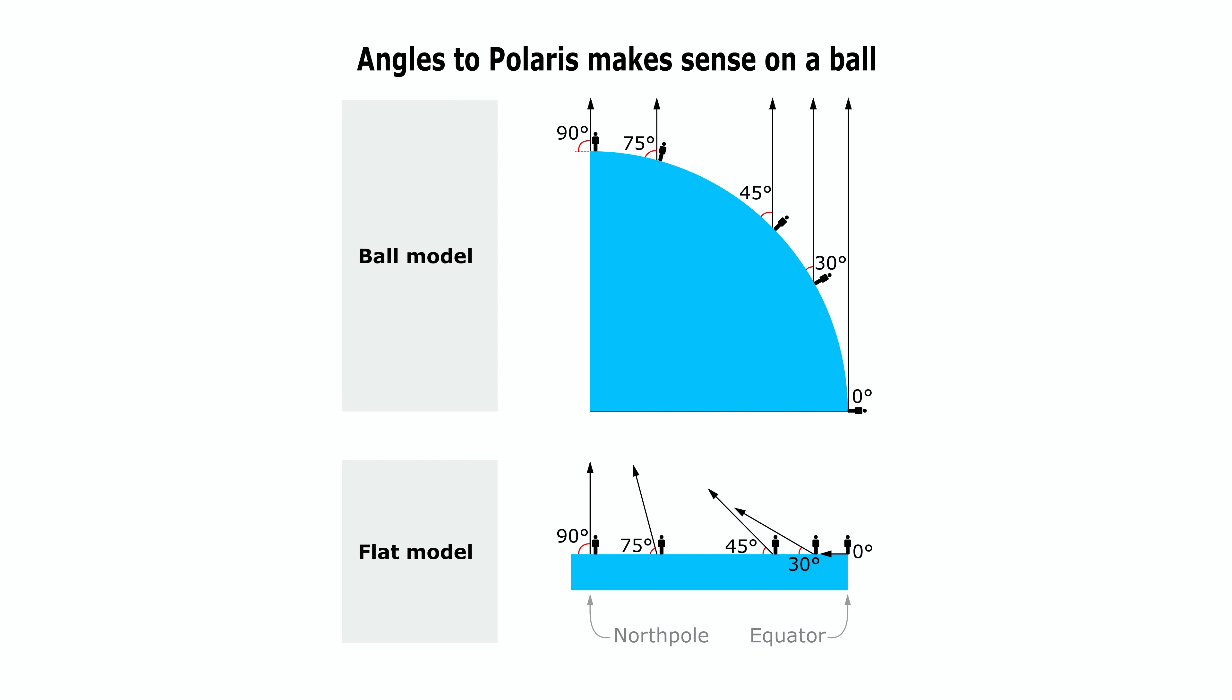The top model is what we are going to prove. As it is now, the theoretical proofs we have made all use a globe Earth model, which we have not proven yet. So our task is to prove that the angle up to Polaris is as we predict it to be.